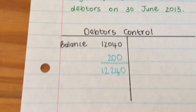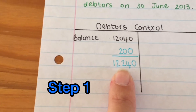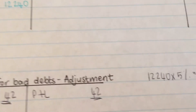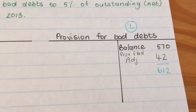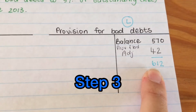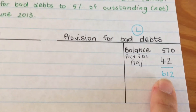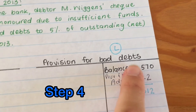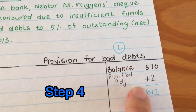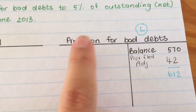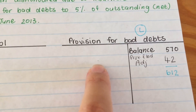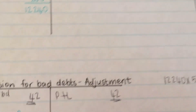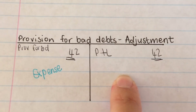Let's go over it again. Step one: work out the new amount for debtors control. Step two: calculate 5% of the new debtors amount — that answer is the new balance, whether it's more or less. Then work out the difference between the new and old balance. If you need to add, it's an expense. If the amount was less and you had to subtract, you'd enter it on the credit side and it would be income.